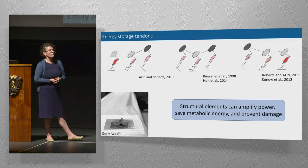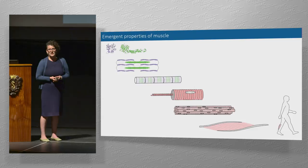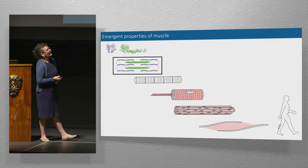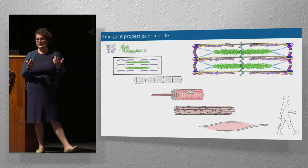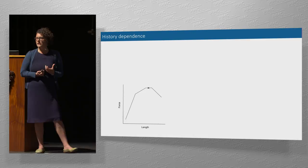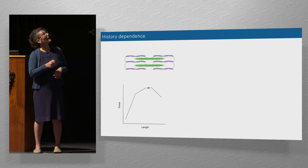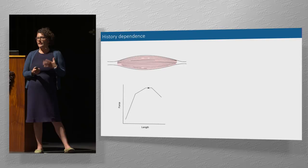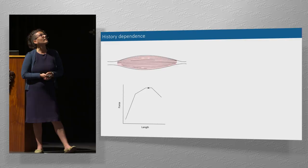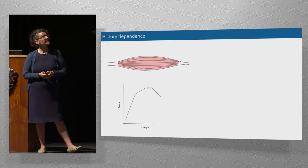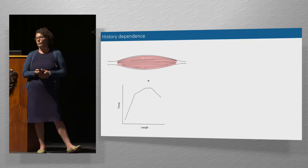We're now moving more towards looking at what's happening down at the sarcomere and protein level — what interesting emergent properties might we get from this? We had this idea of a force-length relationship where at one sarcomere length we had the best overlap. But if we let our muscles shorten to that length and then contract, we get less force out; if we stretch our muscle out to that length, we get more force out. Suddenly we've got all of this variation in the force our muscle can produce at a given length.